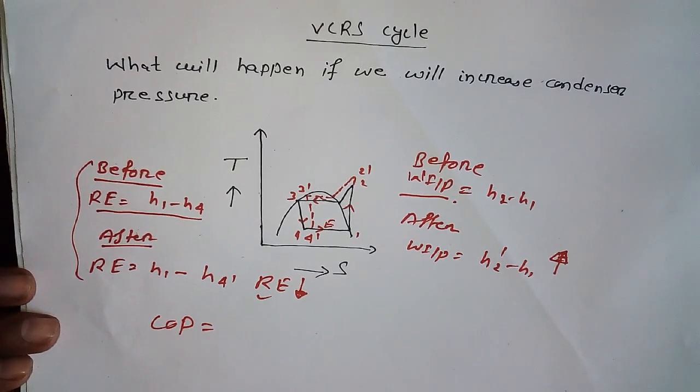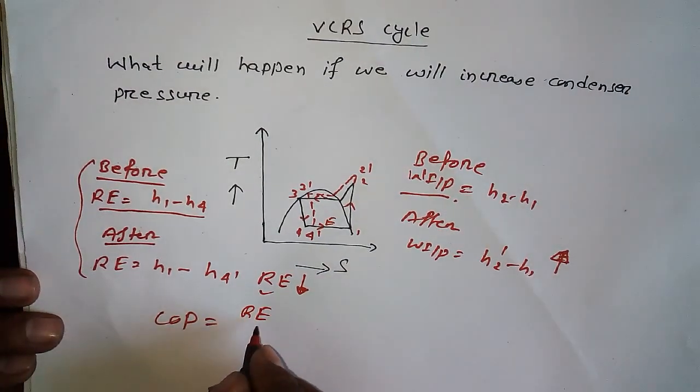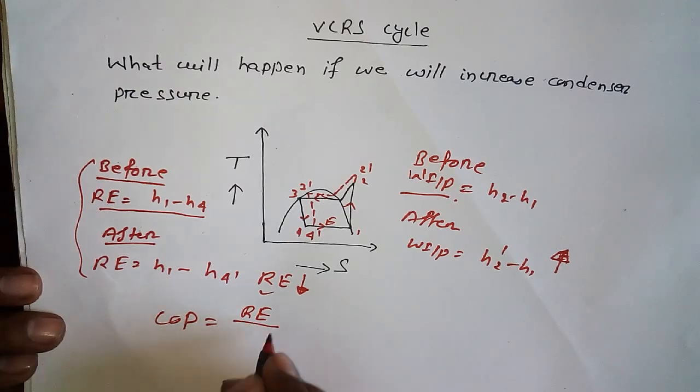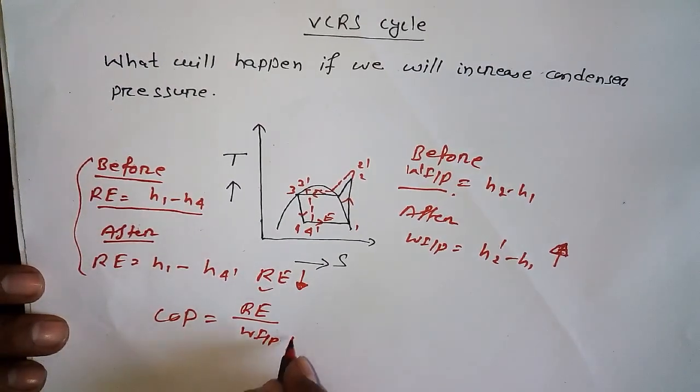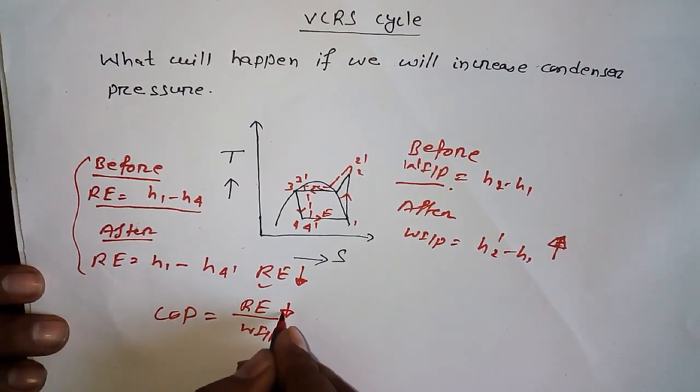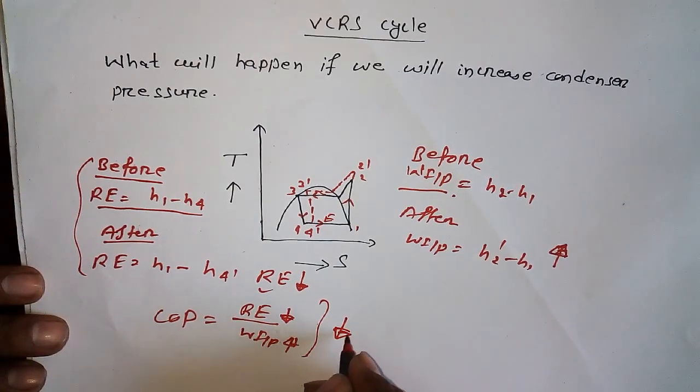That is COP, coefficient of performance. COP equals refrigerant effect divided by work input. If work input is increasing and refrigerant effect is decreasing, then COP is decreasing.